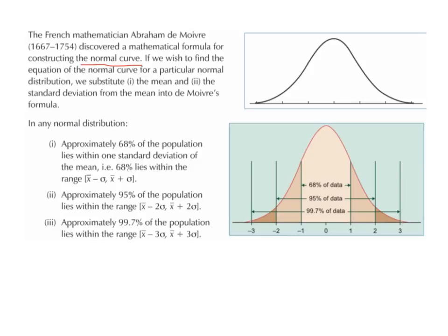If we wish to find the equation of the normal curve for a particular normal distribution, we substitute the mean and the standard deviation from the mean into De Moivre's formula. In any normal distribution,